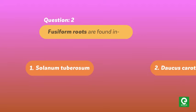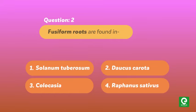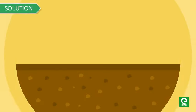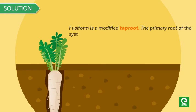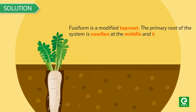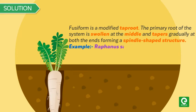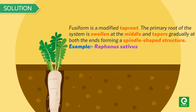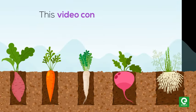Question two: fusiform roots are found in — (1) Solanum tuberosum, (2) Daucus carota, (3) Colocasia, (4) Raphanus sativus. This question was asked in BHU 1996. Solution: fusiform is a modified taproot where the primary root is swollen at the middle and tapers gradually at both ends, forming a spindle-shaped structure. Example: Raphanus sativus. Hence option four is correct.